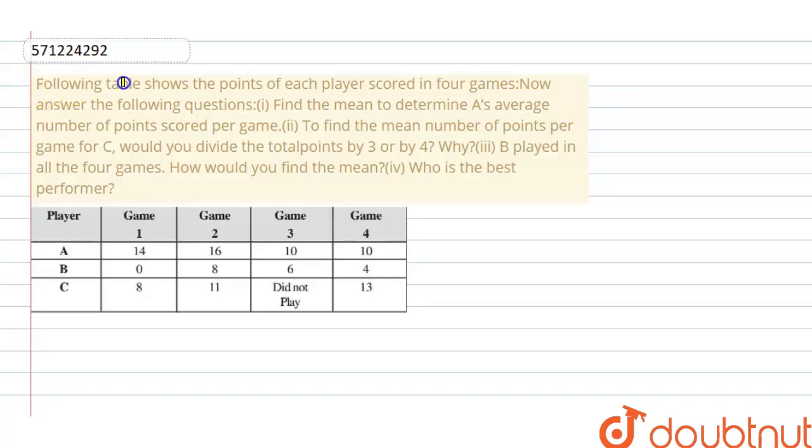The following table shows the points each player scored in 4 games. Now answer the following questions. First, find the mean to determine A's average number of points scored per game. We will solve it one by one. First, I will solve the first part asking for mean.